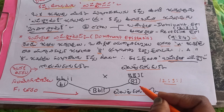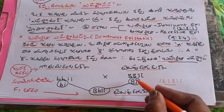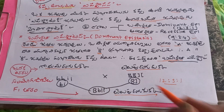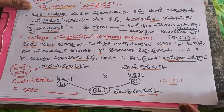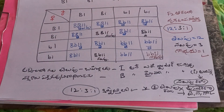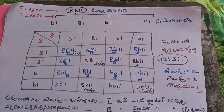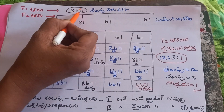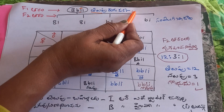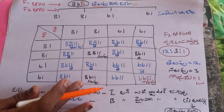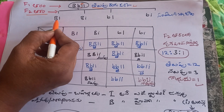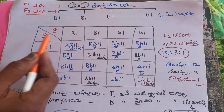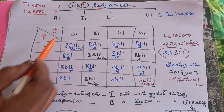This is the epistasis. We will try to work out this table. I will start the cross in F1 with big B, small B, big I, small I. On the F2, we will be able to work out the cross the same way.